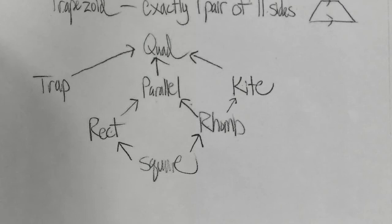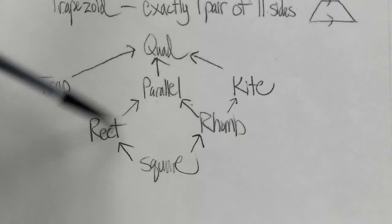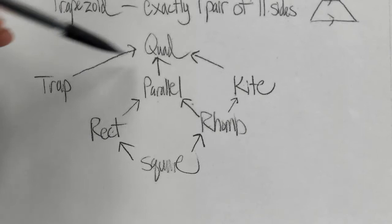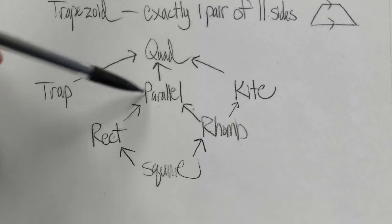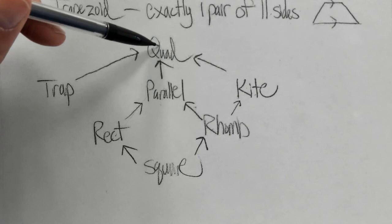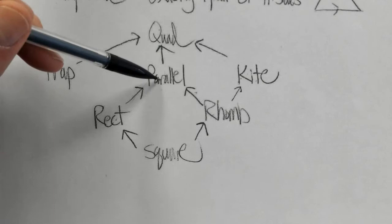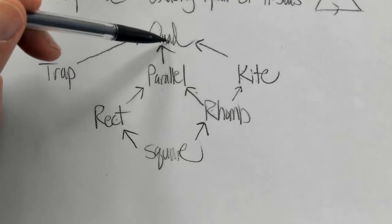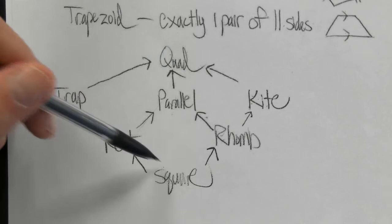Here's the chart. Anything connected to something else with an up arrow is also that thing. They're all connected to quadrilateral because all of these have four sides. A trapezoid is a quadrilateral; a parallelogram is a quadrilateral. If it's connected to something above it through the up arrows, then it's also that thing. A square is a quadrilateral, a kite is a quadrilateral, a rhombus is a quadrilateral. A trapezoid only falls under quadrilateral. A rectangle is a parallelogram and a quadrilateral. A rhombus is a kite, a quadrilateral, and a parallelogram. A square is everything except a trapezoid. This chart helps you keep straight which ones also fit the definition of other quadrilaterals.